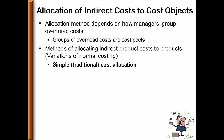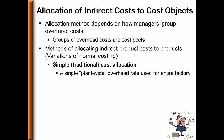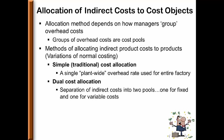The simple method, known as traditional in your managerial class, uses a single plant-wide overhead rate for the entire factory. A dual cost allocation method separates indirect cost into two pools — one for fixed and one for variable. And finally, activity-based costing, also known as ABC, where multiple overhead rates exist — one for each activity.